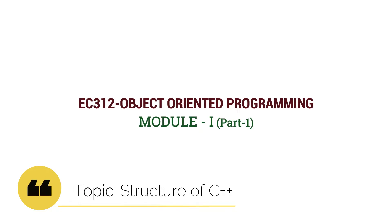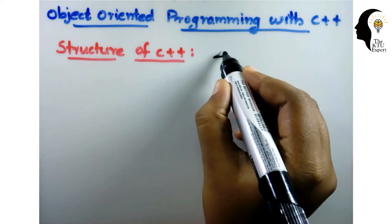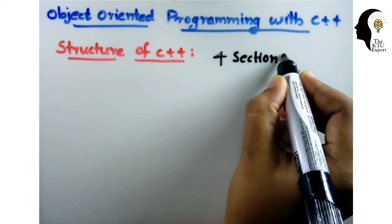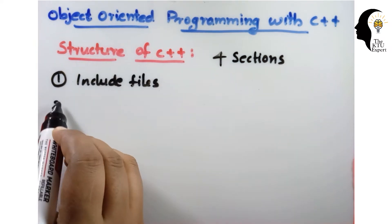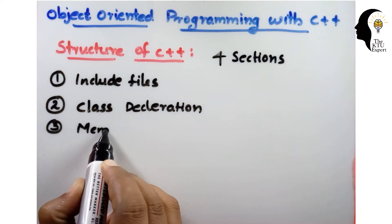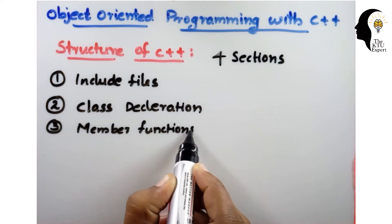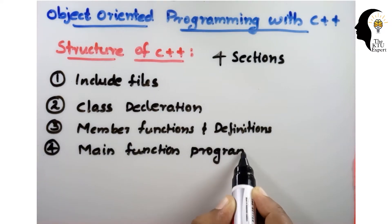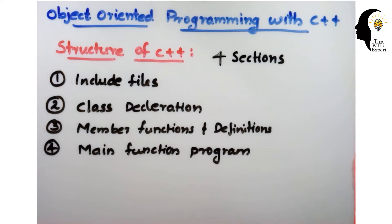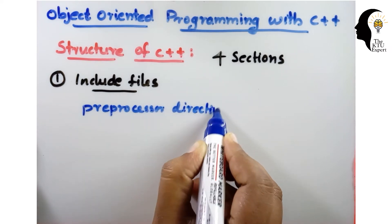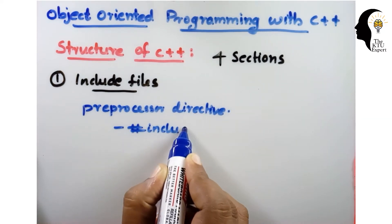Hi students, today we are going to discuss the structure of C++ in object-oriented programming. The structure of C++ contains four sections: first, include file; second, class declaration; third, member function definition; and fourth, main function programming. The first one is include file — it contains preprocessor directives. Preprocessor directives start with hash, and the compiler processes them before compiling the program.